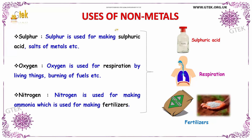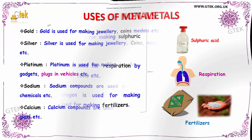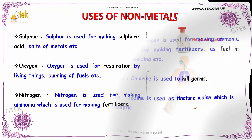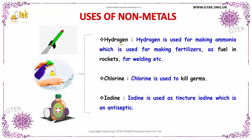Considering the uses of non-metals: sulphur is used for making sulphuric acid and salts of metals. Oxygen is used for respiration by living things and burning. Nitrogen is used for making ammonia, which is used for making fertilizers. Hydrogen is used for making ammonia, as fuel in rockets, and for welding. Chlorine is used to kill germs. Iodine is used as tincture iodine, which is an antiseptic.